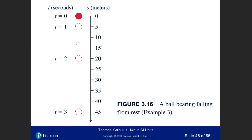A ball bearing falling from rest: at the initial point the ball has no velocity. When you release it, due to gravitational acceleration, the velocity increases. In the first second it moves a small distance; in the second second it moves farther — velocity is increasing due to gravity. Since the motion is downward, the acceleration is minus 9.8 meters per second squared. That's the gravitational acceleration from Earth.